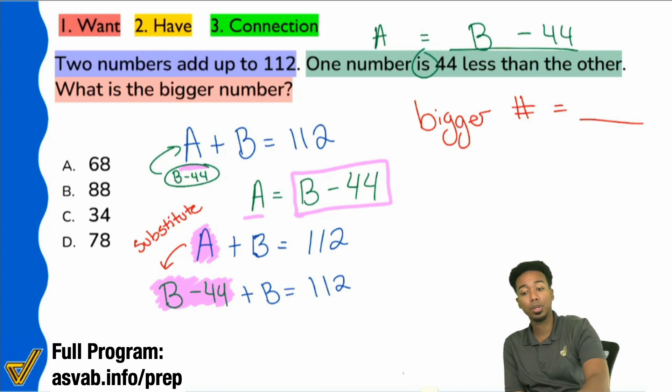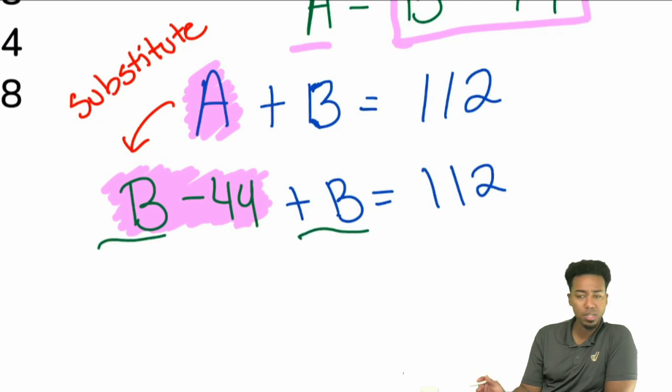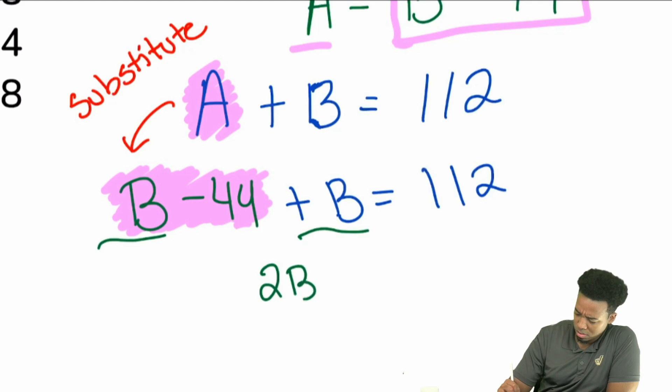Now that we're here, look at what's possible. Very straightforward now. We got B minus 44 plus B equals 112. Everybody, let's go ahead and combine some like terms. What's B plus B? What's that going to give us? Right, 2B.